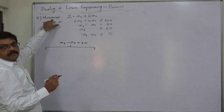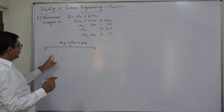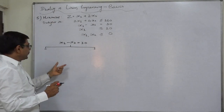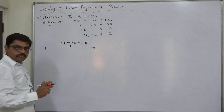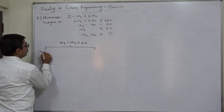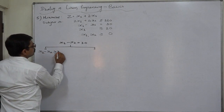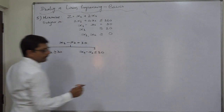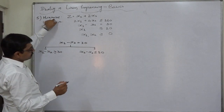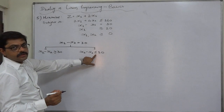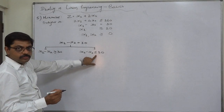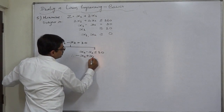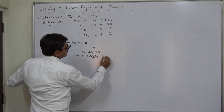Which inequality to write first depends on the objective. If the objective is minimization, write the greater than or equal to inequality first. If the objective is maximization, write the less than or equal to inequality first. Since our objective is minimization, the second inequality must also become greater than or equal to, giving us minus x1 plus x2 greater than or equal to minus 30.